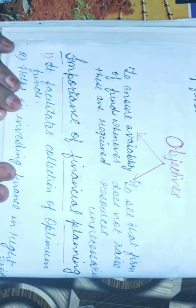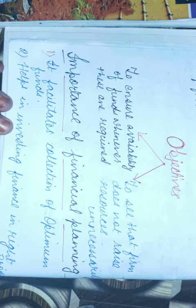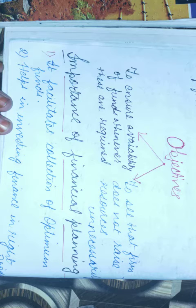Next is importance of financial planning. First importance: it facilitates collection of optimum funds. The financial planning estimates the precise requirement of funds, which means to avoid wastage and over-capitalization situation. आपको उतना ही fund मिलना चाहिए जितना जरूरत है — there should not be more funds to avoid wastage. Over-capitalization का मतलब होता है जितनी capital की requirement नहीं है उससे ज़्यादा capitalization कर लेना — वो situation भी नहीं होनी चाहिए।